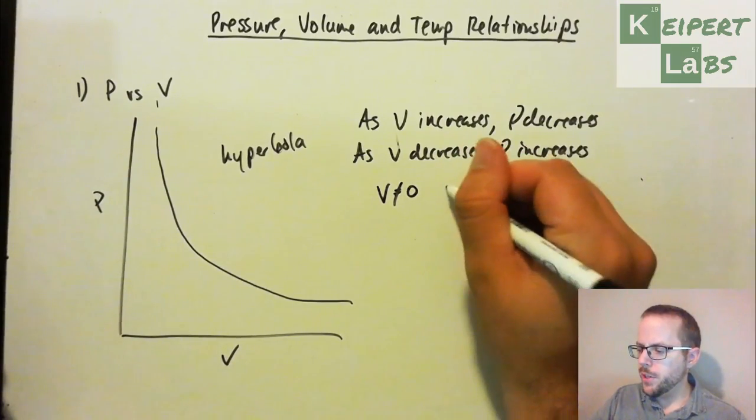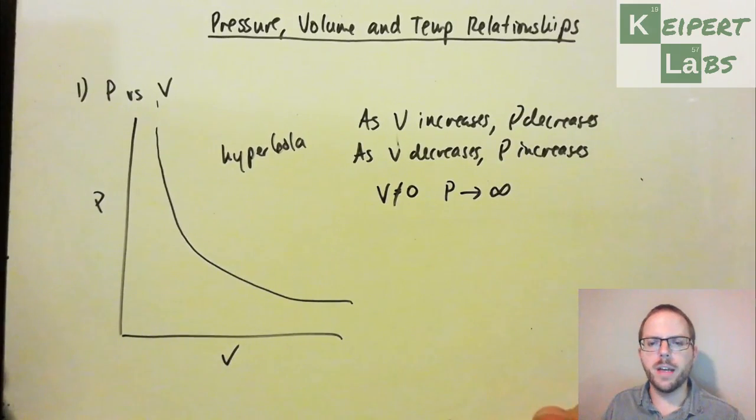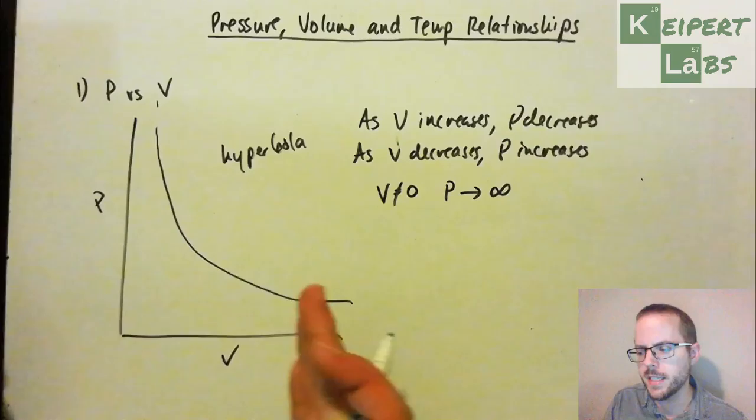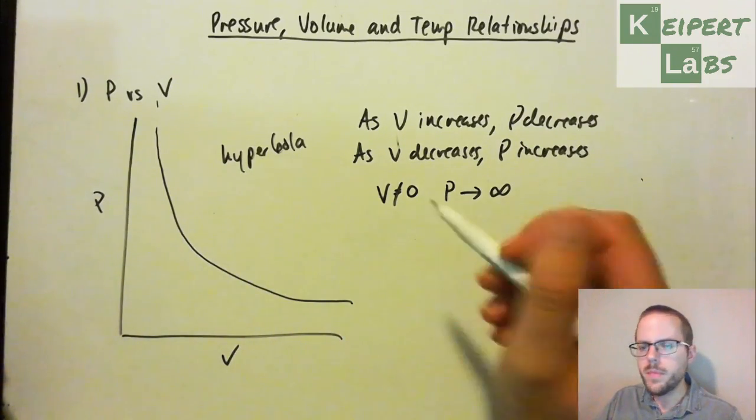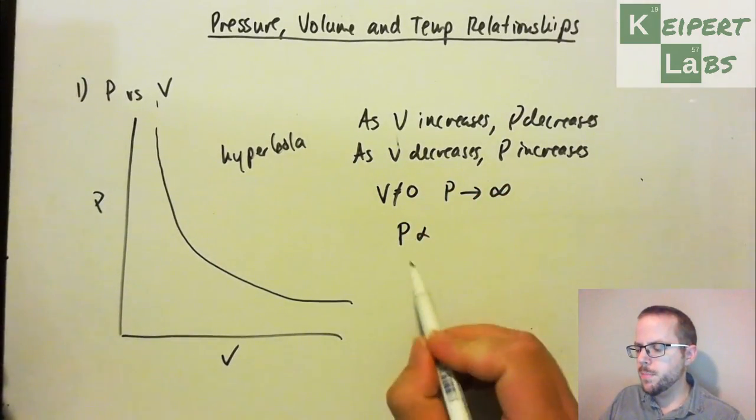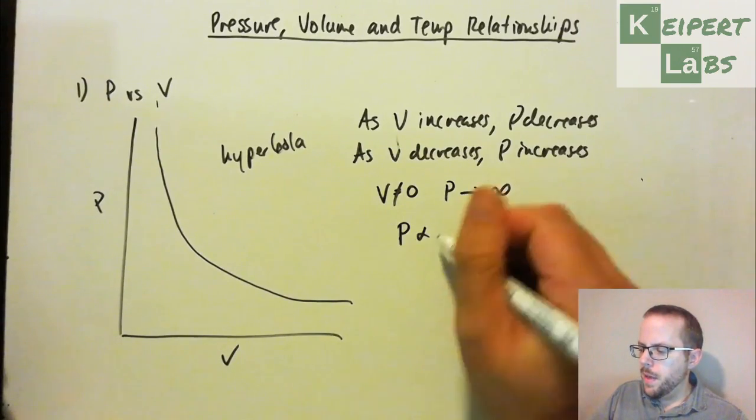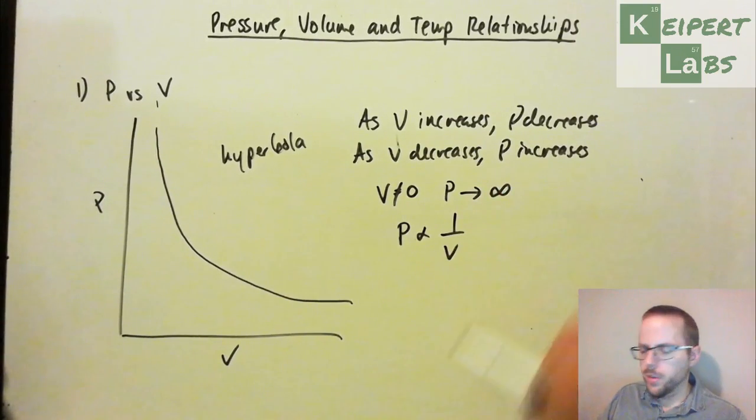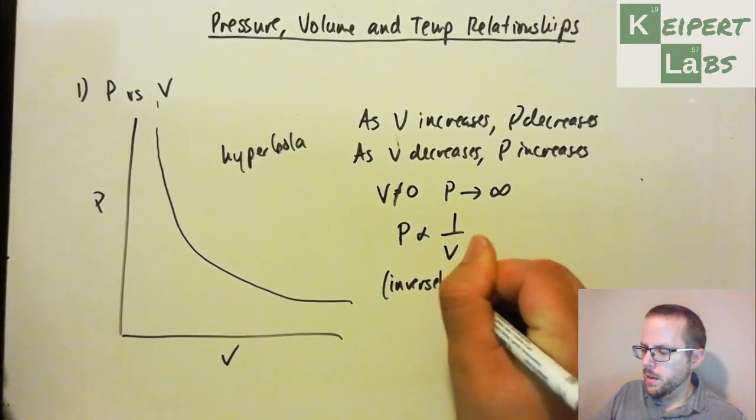But that is, if you could keep compressing it down, then we'd get to that sort of stage. So mathematically, we look at this idea, we say that pressure is proportional to, that's what this symbol represents, one over volume. So we would say these two things are inversely proportional.